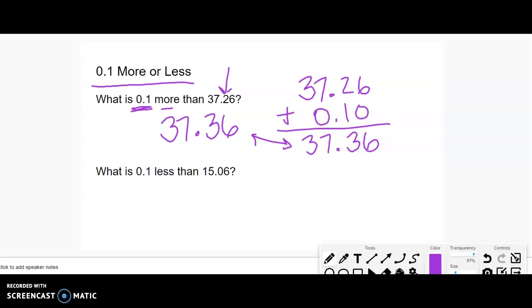Now, what is 0.1 less than 15.06? This one is a little harder because if I look at the tenths place, I have zero. How do I get one-tenth less than zero tenths?